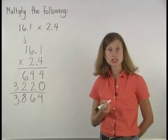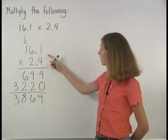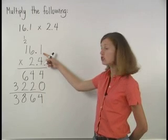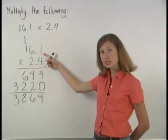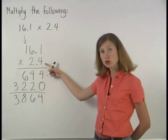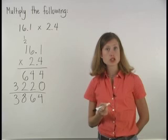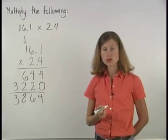Our final step is to determine where the decimal point goes in our final answer. Notice that since there's one digit to the right of the decimal point in 16.1 and 1 digit to the right of the decimal point in 2.4, we have a total of 2 digits to the right of the decimal point in our original numbers.